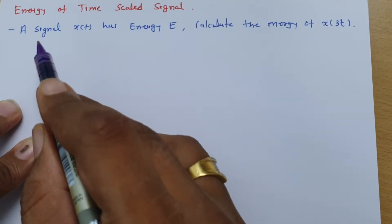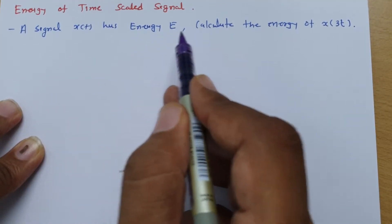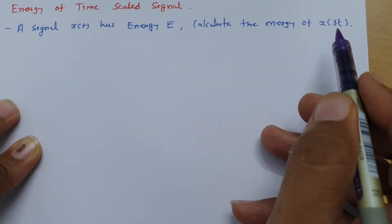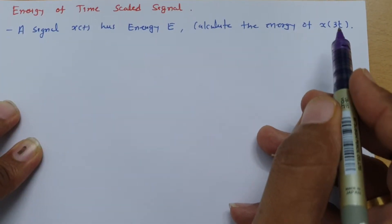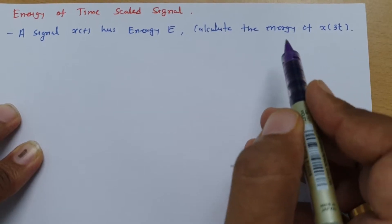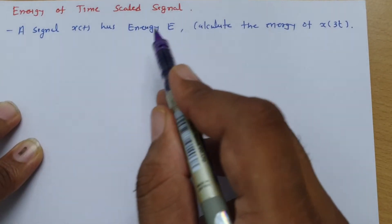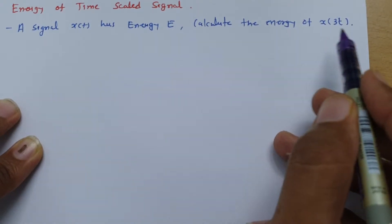So here the question is: a signal x(t) has energy E, then calculate energy of x(3t). So here I have scaled time by multiplying time with 3. So our agenda is to calculate the energy in terms of E for signal x(3t).